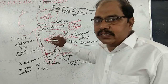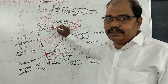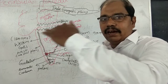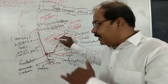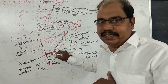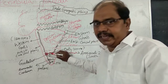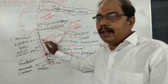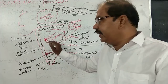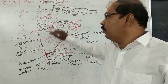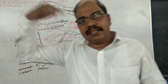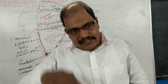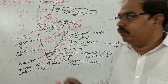The boundaries of the Deccan Plateau are: northern side — the Satpura mountain range; southern side — the Nilgiri Hills; western side — the Western Ghats; and eastern side — the Eastern Ghats. So four mountain boundaries surround the Deccan Plateau.